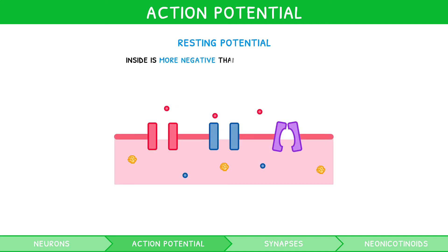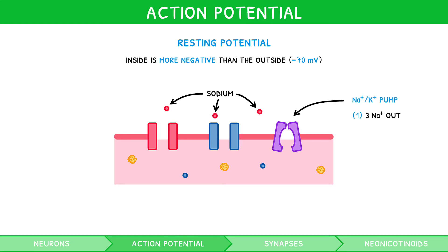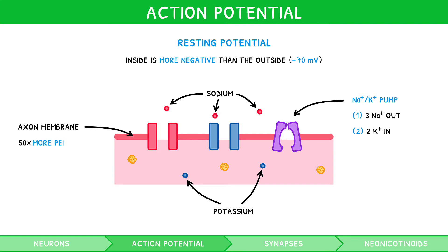At resting potential, the inside of an axon is said to be more negative compared to the outside. Numerically, we say it has a resting potential of minus 70 millivolts. There are three contributing factors: a sodium-potassium pump, which pumps three sodium ions out and two potassium ions in, creating a concentration gradient and imbalance of charge; the axonal membrane, which is 50 times more permeable to potassium so it can diffuse out, exaggerating the imbalance of charge; and negative proteins inside of the axon.